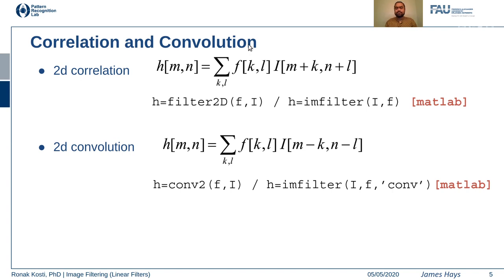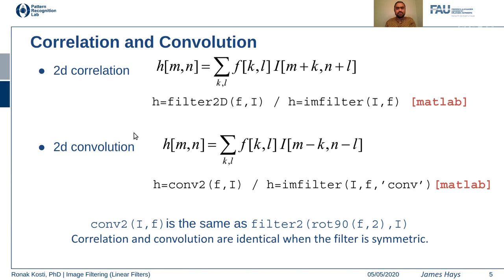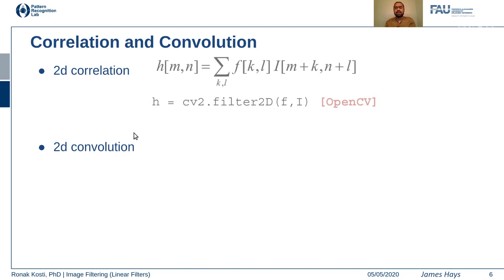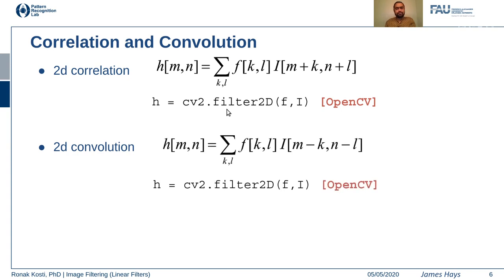The mathematical definition of convolution is a bit different from correlation — the signs here are negative. Mathematically, convolution is the same as correlation when you do a 180-degree rotation of the filter and then apply it. However, if your filter is symmetric, then correlation and convolution become the same. Here is an example of filtering in OpenCV — cv2.filter2D is the filtering operation in OpenCV, and it works the same for correlation as well as convolution.